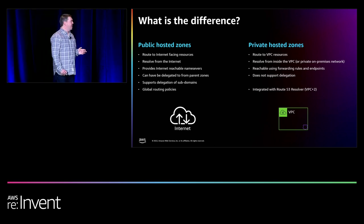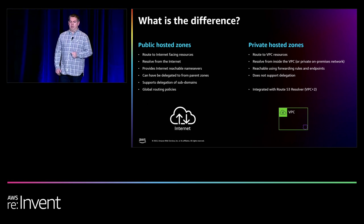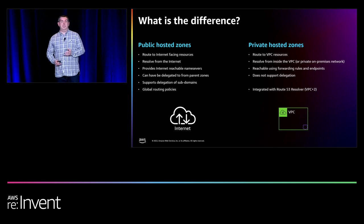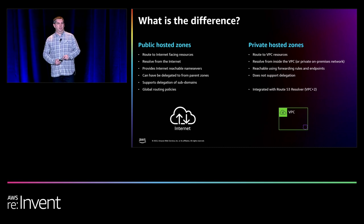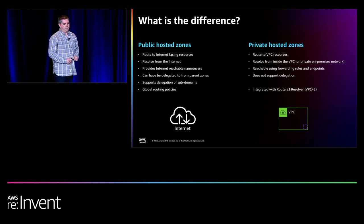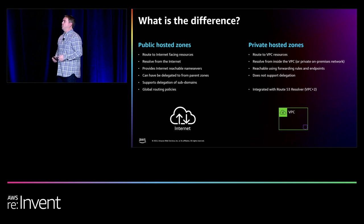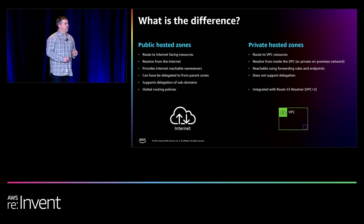Public hosted zones are intended for things facing towards the internet — they are resolvable from the internet, and those Route 53 name servers assigned to the domain name are reachable across the public internet. The opposite is true for private hosted zones — they're intended to refer to things inside perhaps a VPC. You can't query those from outside that VPC, although you can do that via Route 53 resolver endpoints. On the public hosted zone side, delegation is required — the idea of delegating from .com down to Unicorn Packet must work from a public hosted zone perspective.